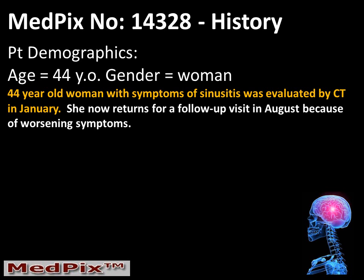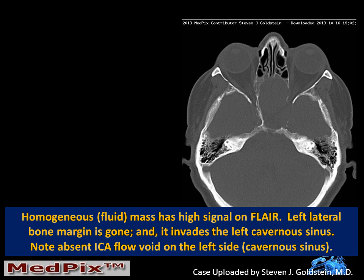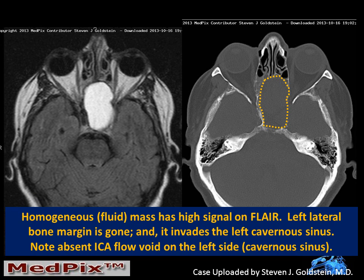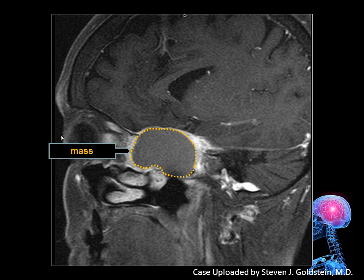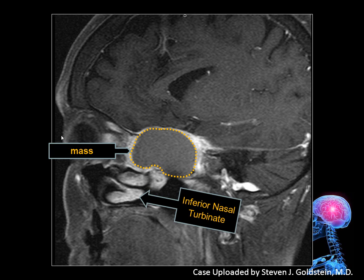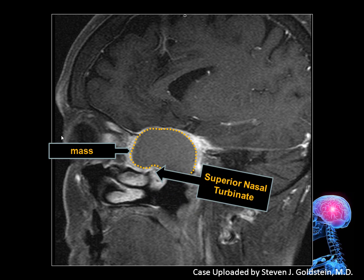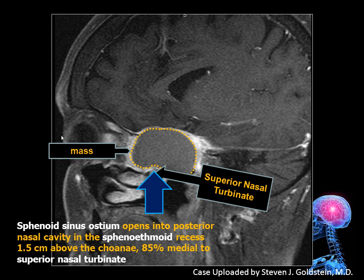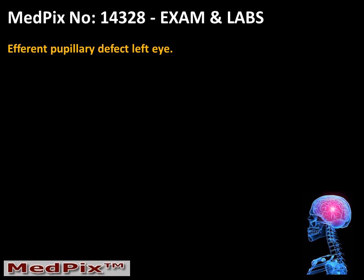Our patient returned for a follow-up visit in August because of worsening symptoms. We can now see that the sinus cavity is further enlarged, and there is high attenuation material accumulated within the sinus cavity. We have lost part of the bony margin in the left middle cranial fossa in the area of the cavernous sinus. On the sagittal image, we can see the mass with homogeneous fluid signal, and we can see the inferior, middle, and superior nasal turbinates. This is the location for the sphenoid sinus ostium, just medial to the superior nasal turbinate. Our patient now has a new afferent pupillary defect in the left eye.